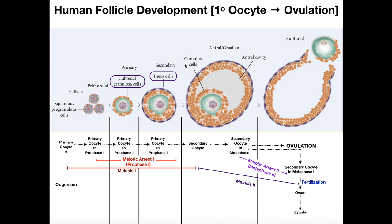During the development of the secondary follicle into the graafian follicle, the primary oocyte — which was arrested in prophase I — gets the signal to develop further. It leaves prophase I, progresses through metaphase I and so on, and completes meiosis I. Completing meiosis I produces a polar body and yields a secondary oocyte. That secondary oocyte then starts meiosis II but only progresses to metaphase II, where it becomes arrested again.